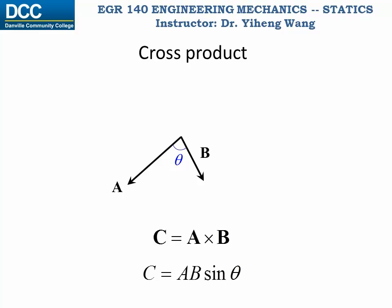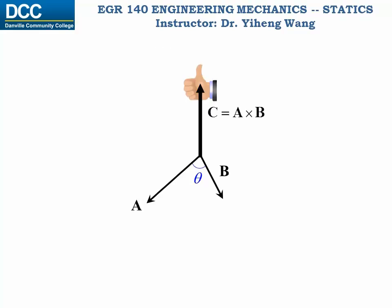What about the direction of vector C? The direction is determined by the right-hand rule. When you roll your four right-hand fingers from vector A towards vector B, your thumb points to vector C's direction. Vector C is perpendicular to both vector A and vector B — in other words, vector C is perpendicular to the plane formed by vector A and vector B.